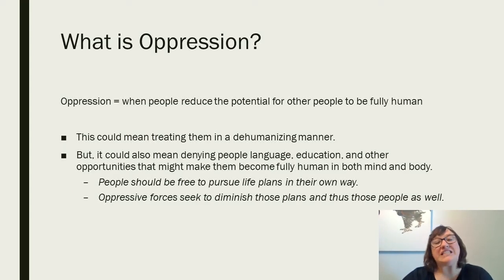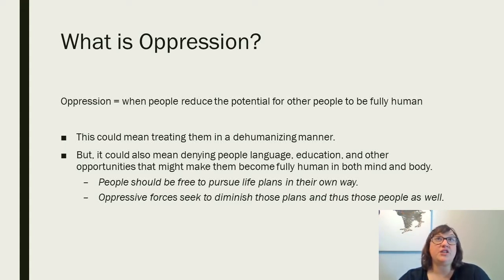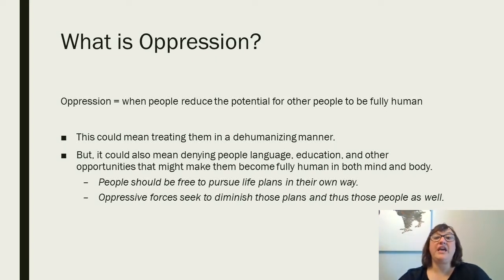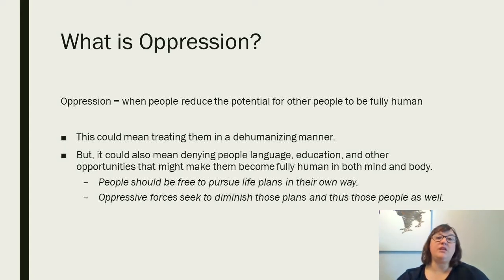For Young, the way she defines oppression is: when people reduce the potential for other people to be fully human. This could mean treating them in a dehumanizing manner, but it could also mean denying people language, education, and other opportunities that might make them become fully human in both mind and body. People should feel free to pursue their life plans in their own way, and oppressive forces seek to diminish those plans, and thus those people as well.